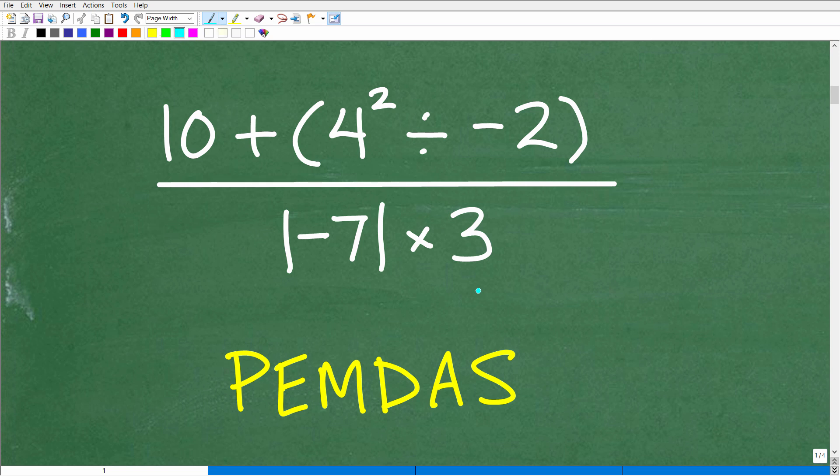But before we get started with this problem, we need to understand a super important concept in mathematics, and that is called the order of operations. So we have all different sorts of mathematical operations going on here. Like addition, division, powers, this thing is called absolute value, multiplication, this whole fraction bar. What do we do? Do we do addition first, subtraction, multiplication, division, powers? Like what's the order to do this problem? Because if we do this in various different orders, we're going to get various different answers. Well, luckily for us, we have this cool phrase right here that tells us the exact order to do math problems.